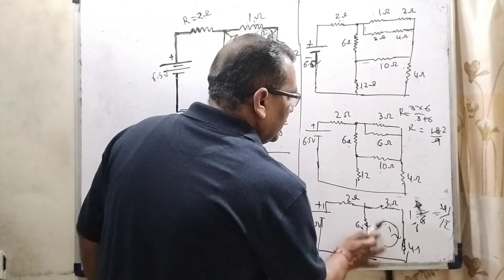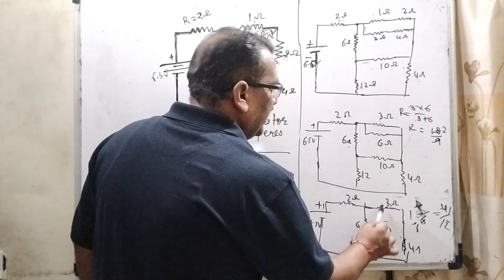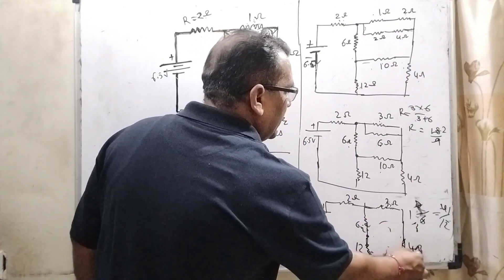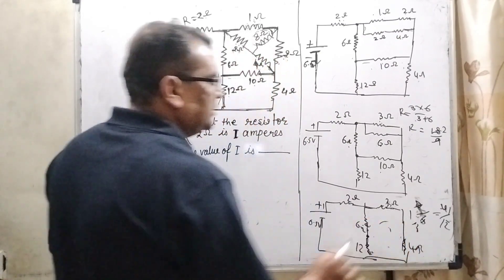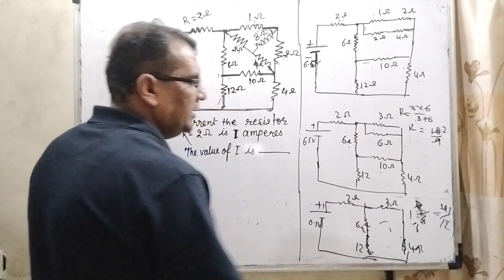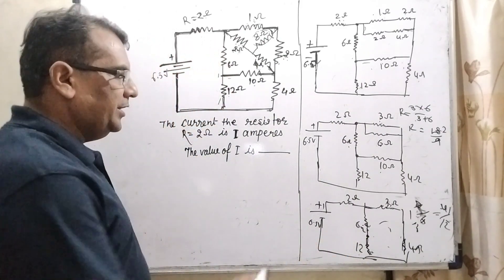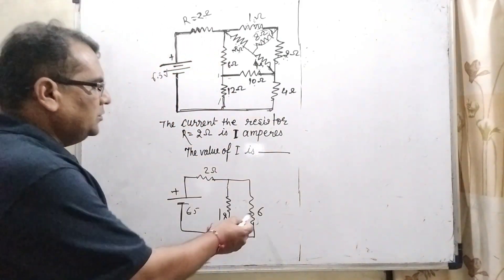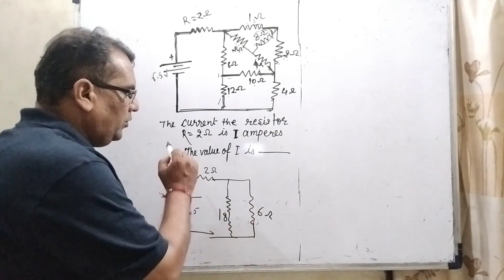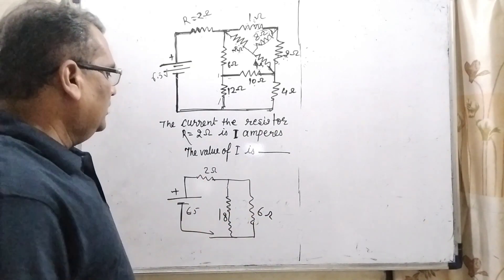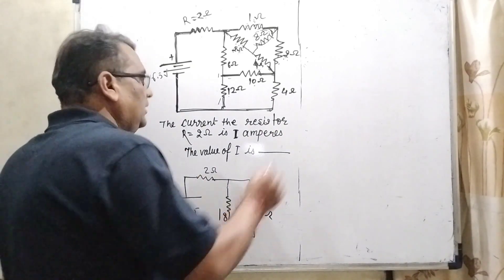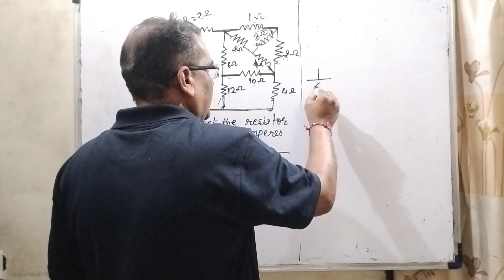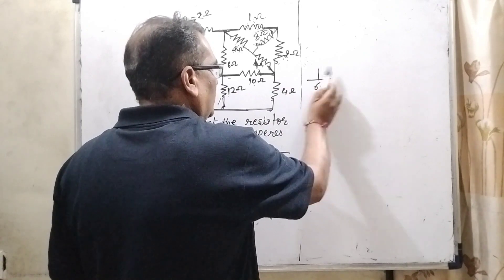So the 10 ohm is removed. Now 2 ohm and 4 ohm are in series giving 6 ohm, and 6 ohm and 12 ohm are in series giving 18 ohm. Redrawing the diagram, 6 ohm and 18 ohm are in parallel.